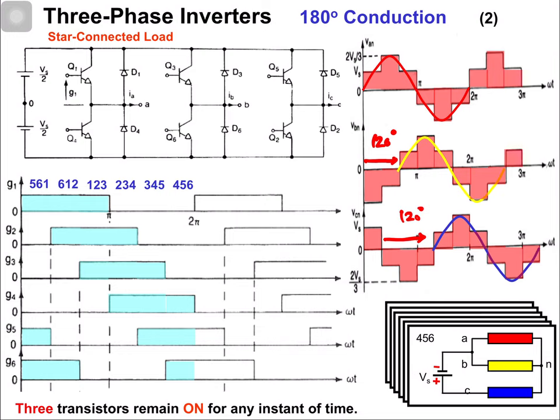These gating signals can be implemented by making a state machine. There are six states which are repeated at regular intervals of time to get the output voltage waveform. If you want to change the frequency you will have to change the time of each state. For 50 Hz, the time period is 20 milliseconds, divided into six equal intervals, so each interval is 3.33 milliseconds. Each switching state is applied for 3.33 milliseconds.